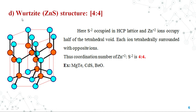The fourth one is the wurtzite structure. In this case, the sulfide ion occupies the HCP lattice, that is the hexagonal close packing lattice, and Zn2+ is occupied at half of the tetrahedral voids. In this diagram, the blue color ball indicates the presence of Zn2+ ions present at half of the tetrahedral voids. Each Zn2+ is tetrahedrally surrounded.